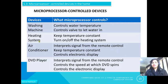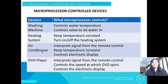In a heating system, the microprocessor keeps the temperature constant and turns the heating system on or off according to the required temperature. In an air conditioner system, it interprets the signal from the remote control to turn the AC on or off, keeps the temperature constant, and controls the electronic display of the AC.